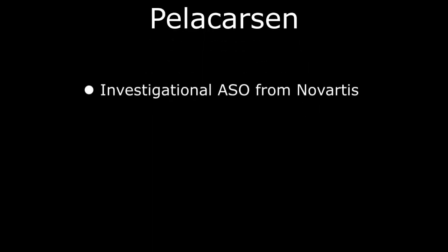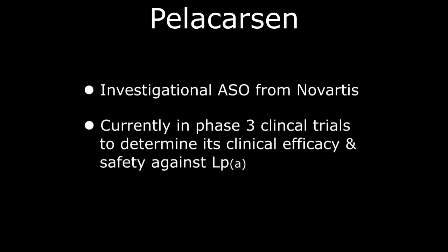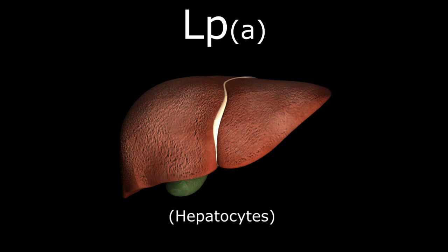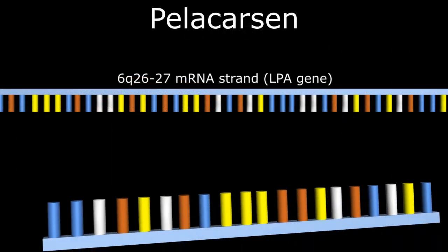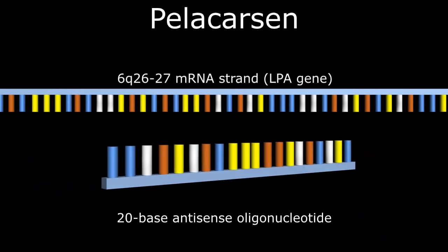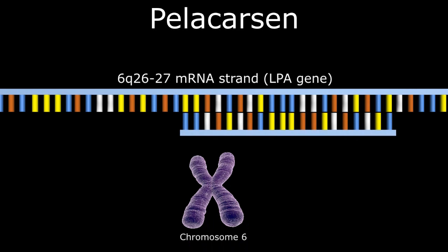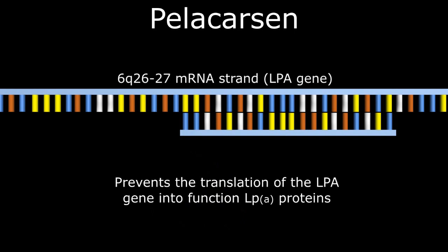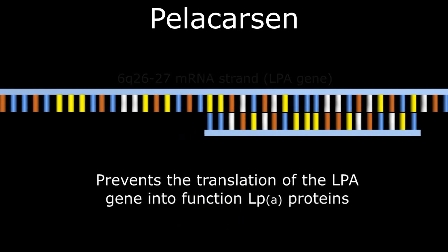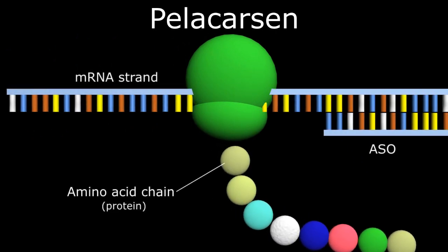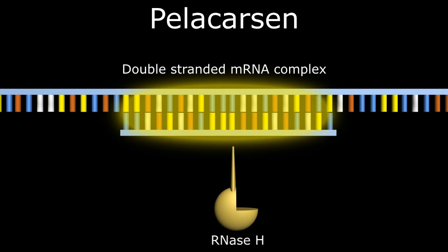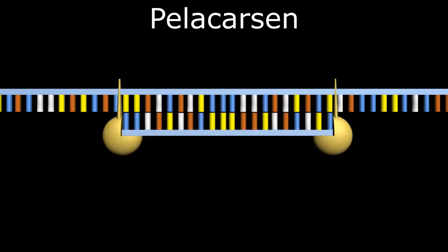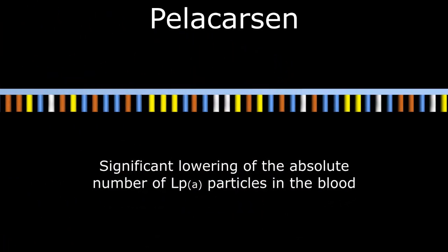Pelacarsen is an investigational ASO from Novartis, currently in Phase 3 clinical trials to determine its efficacy and safety against LP little a. LPA is produced by the basic cells of the liver called hepatocytes, and the LPA gene is found on chromosome 6 at locus 6q26-27. Pelacarsen is a 20-base antisense oligonucleotide that binds to a specific segment of the messenger RNA derived from chromosome 6 in the hepatocyte of the human liver. This binding prevents the translation of the LPA gene into functional LP little a proteins by either directly blocking this segment of messenger RNA or by additional degradation of the double-stranded RNA complex by RNase H. Either way, there is significant lowering of the absolute number of LPA particles in the blood.